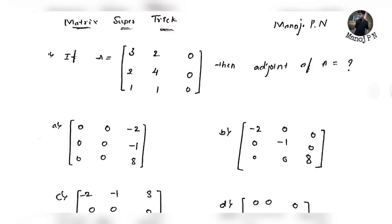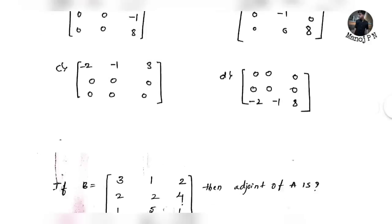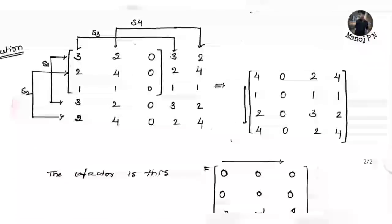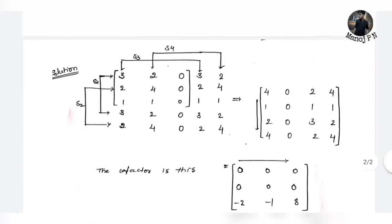Matrix A is equal to 3, 2, 0, 2, 4, 0, 1, 1, 0. Then, adjoint of A is what? So we are going to find the adjoint of this matrix. The trick is very simple.